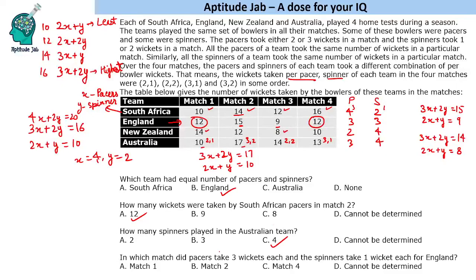In which match did pacers take 3 wickets each and spinners take 1 wicket each for England? For England, we cannot determine this — because putting 3-1 gives 9 + 3 = 12 wickets, which is the same as the 2-2 case. So it can be in either match, and we cannot determine which match had this combination. That was the solution to the set and the answers to the questions.